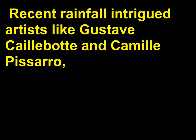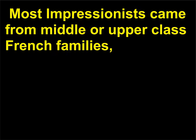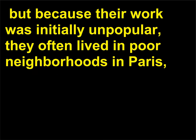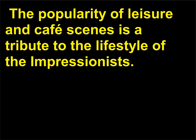Recent rainfall intrigued artists like Gustave Caillebotte and Camille Pissarro, who both painted natural light and light from gas lamps that reflected off the rain-soaked streets of Paris. Most Impressionists came from middle- or upper-class French families, but because their work was initially unpopular, they often lived in poor neighborhoods in Paris, frequently gathering at the Café Guerbois in the Montmartre district. The popularity of leisure and café scenes is a tribute to the lifestyle of the Impressionists.